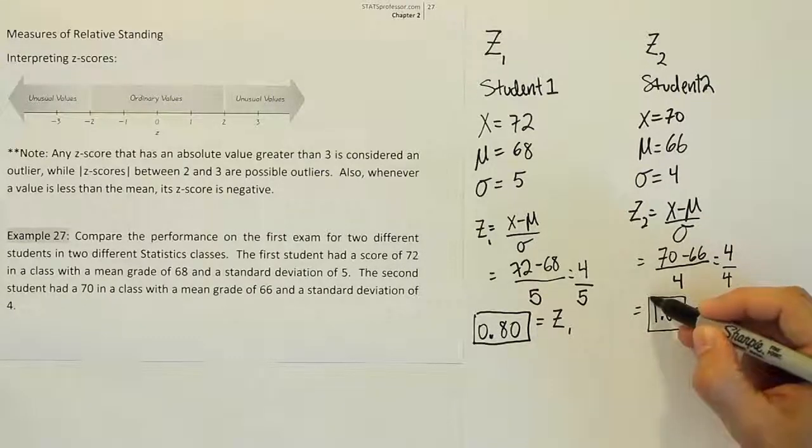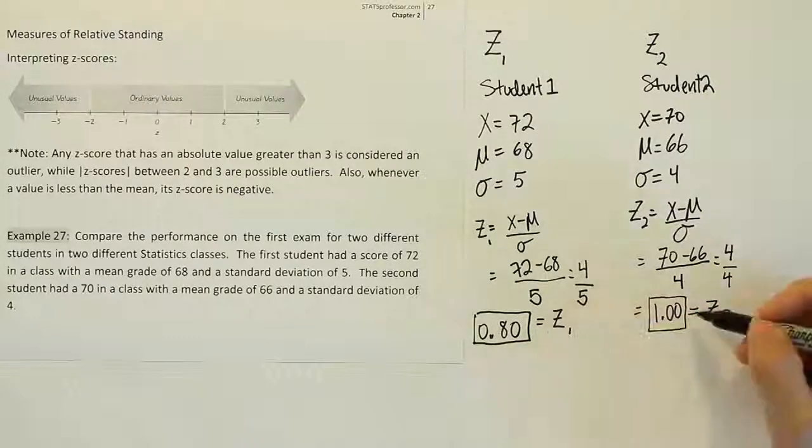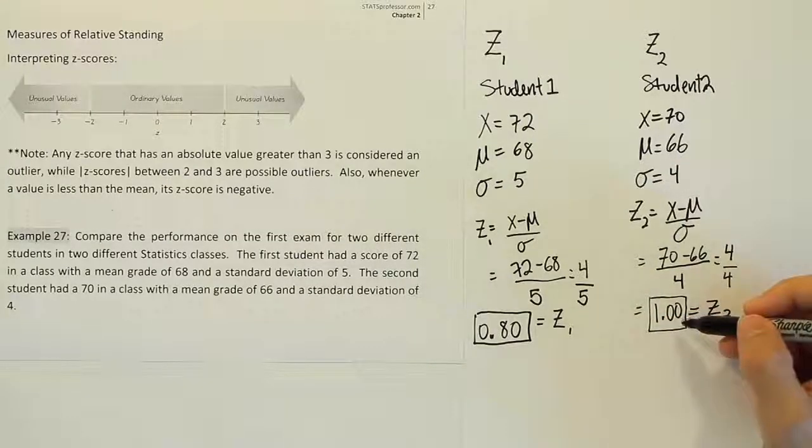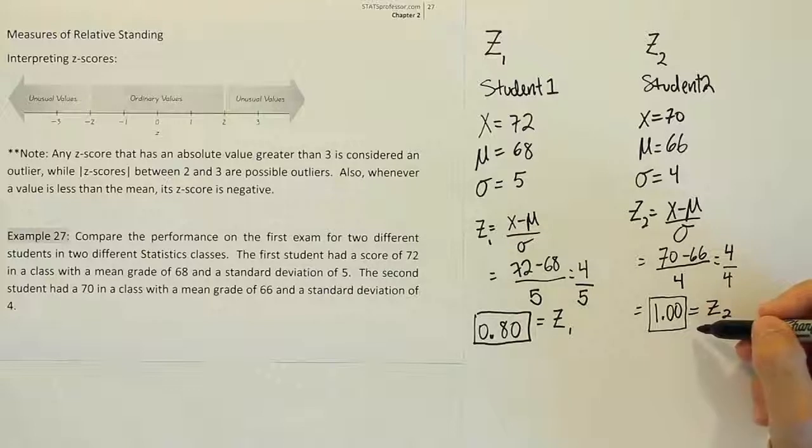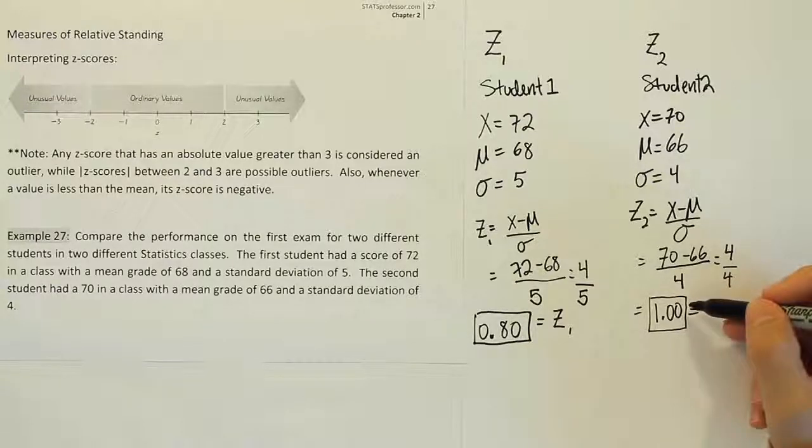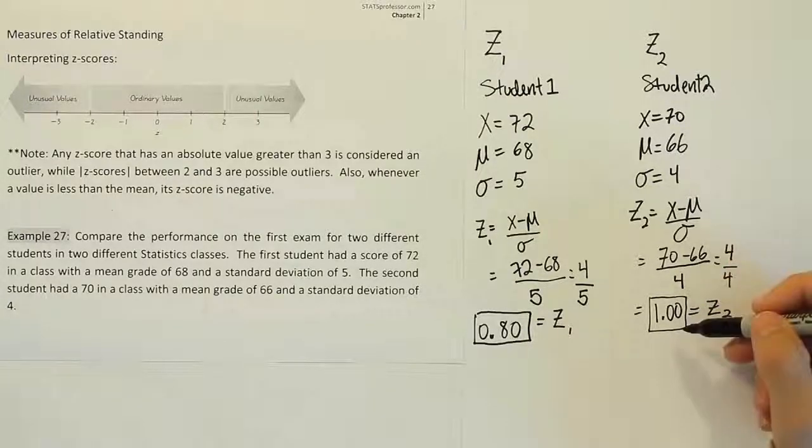So which one is better, z-score 1 or z-score 2? Well, we're going to base it on the size of the z-score. The bigger the z-score here, the better the grade. And the reason why is because generally when you're talking about grades, higher grades are better. So a higher z-score represents a higher grade relative to his classmates.